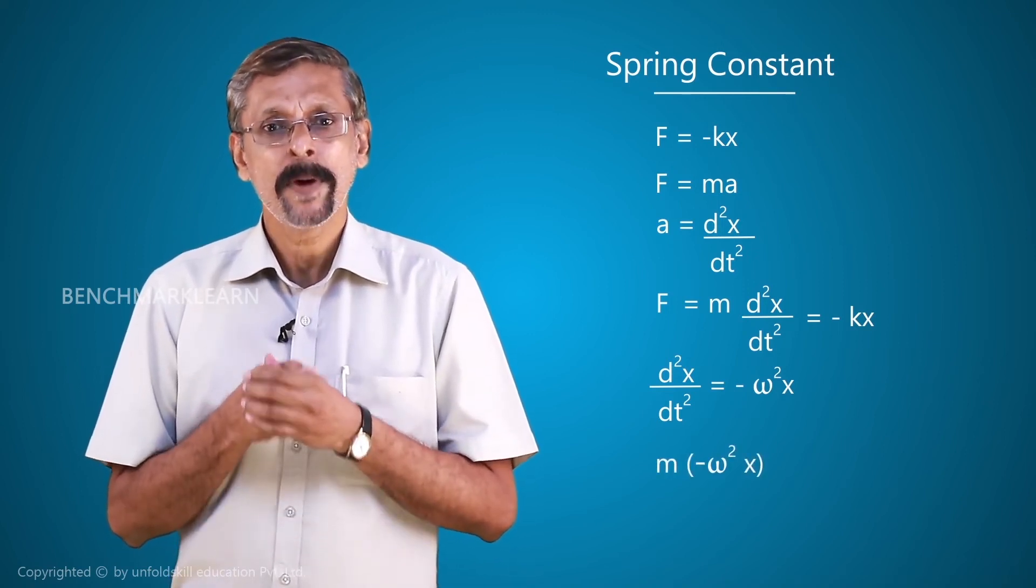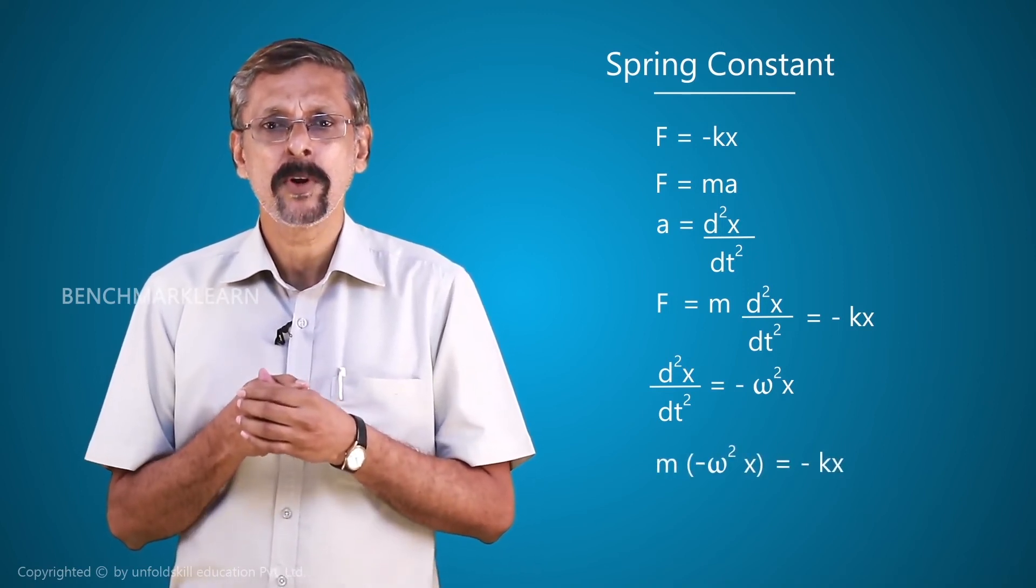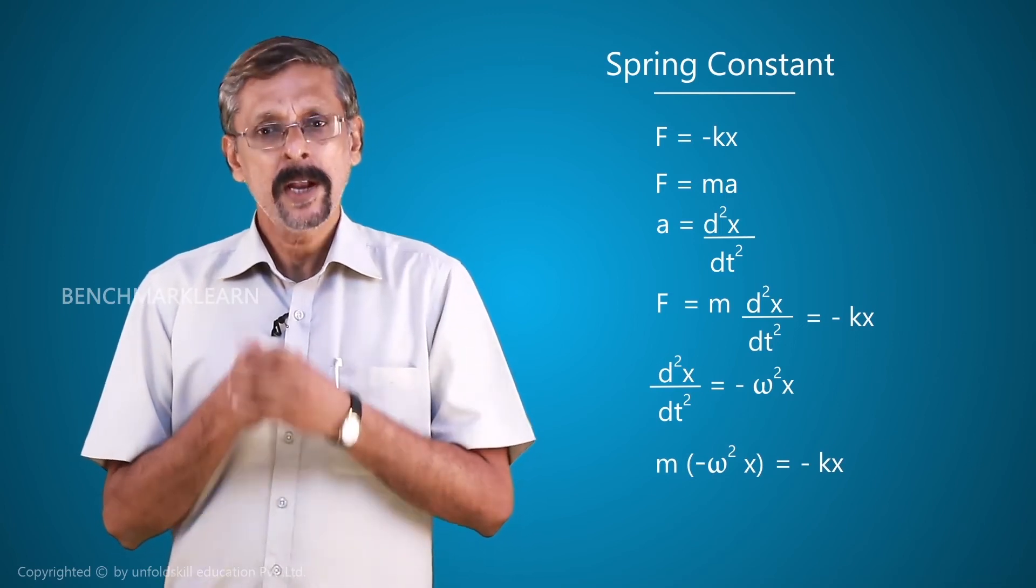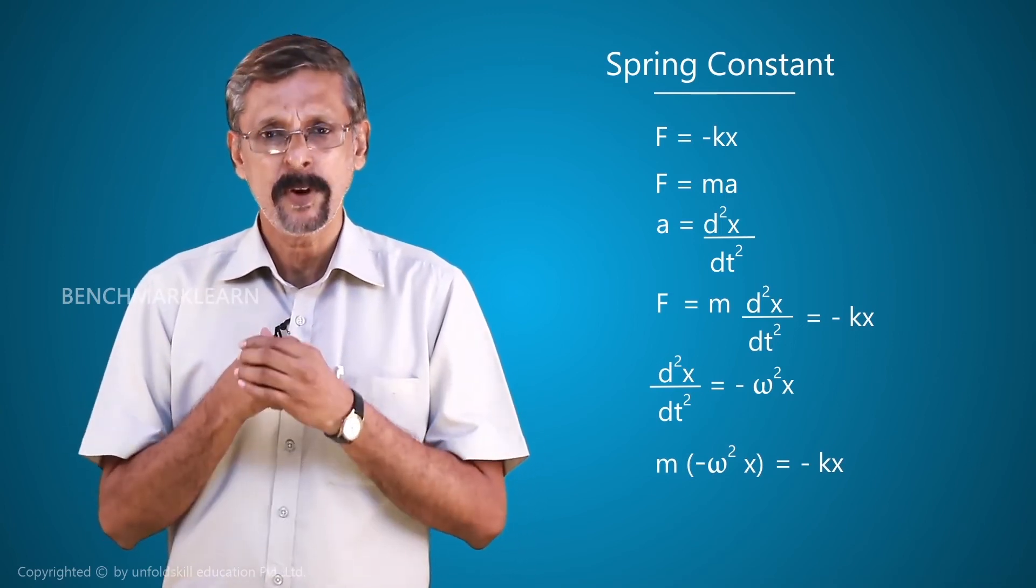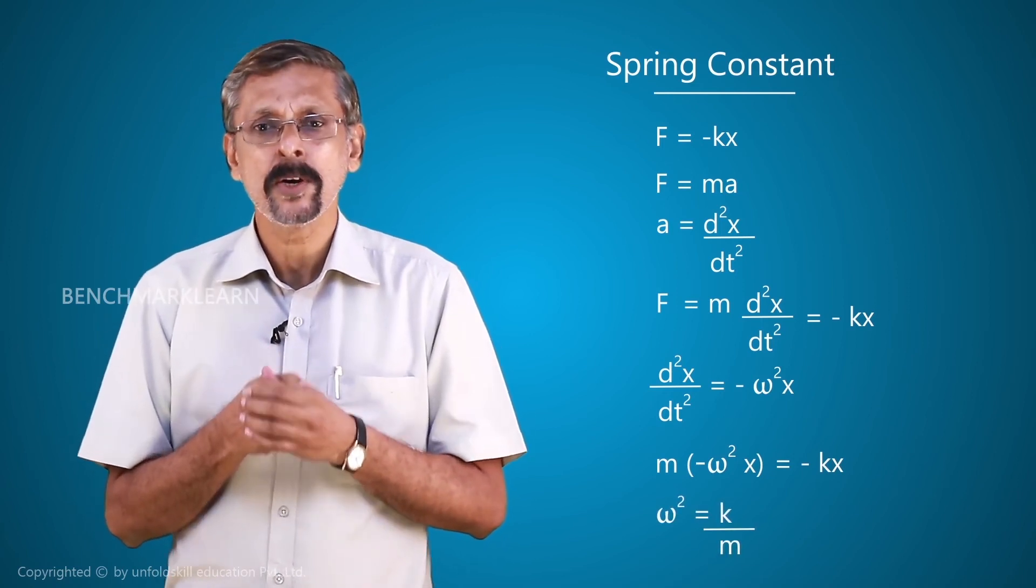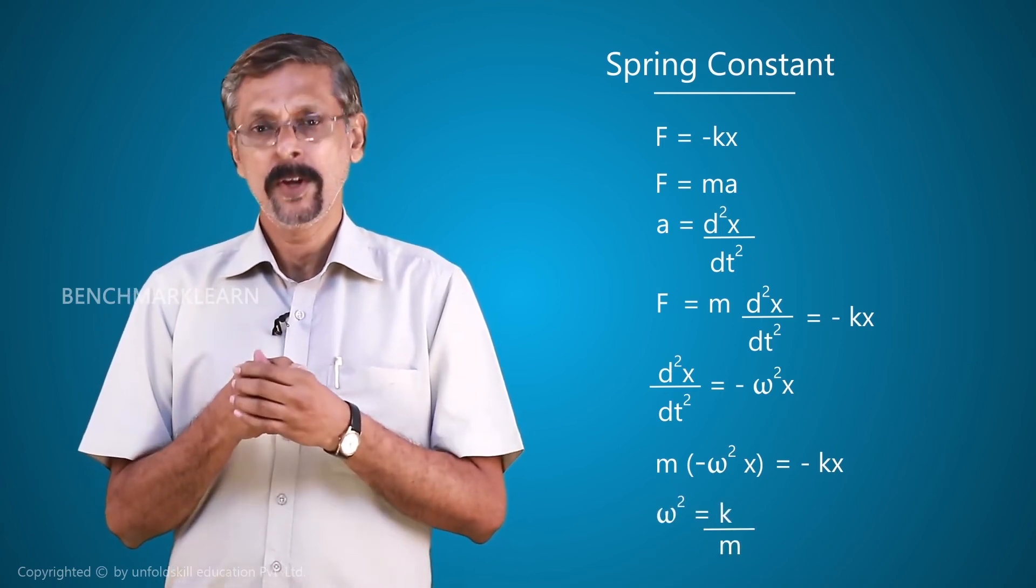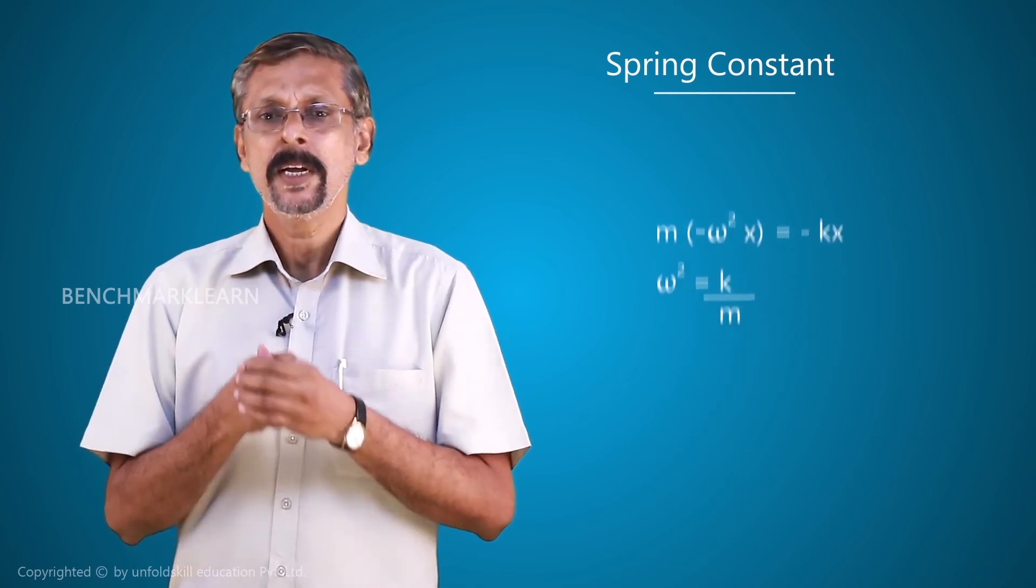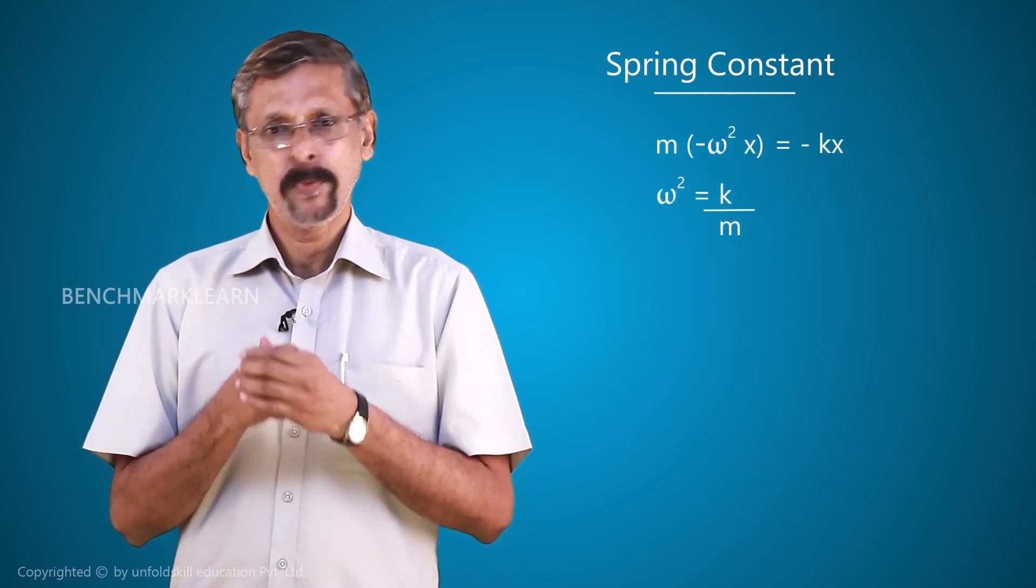Now, this equation is reduced to a very simple form, ω² equal to k/m, where k is the spring constant and m is the mass of the body.